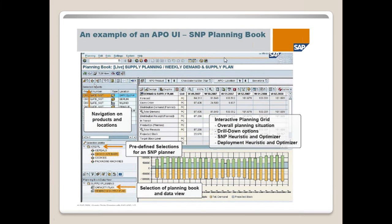These are example screens of APO. You can select a location — like Barcelona — and see the forecast for week 14, week 15, and what the sales order quantity is. If you load product A, it shows how much forecast there is. Data can be viewed monthly, weekly, or at the day level — all in one screen.